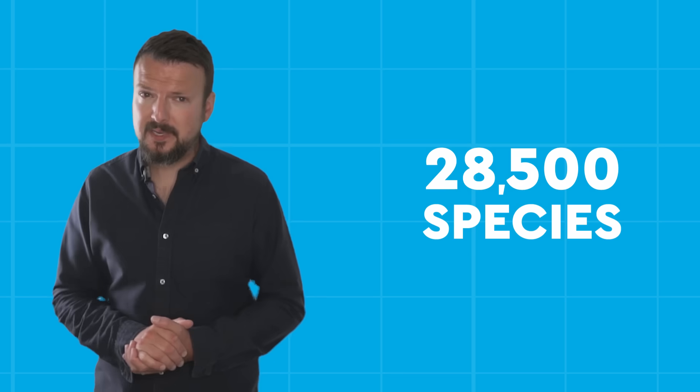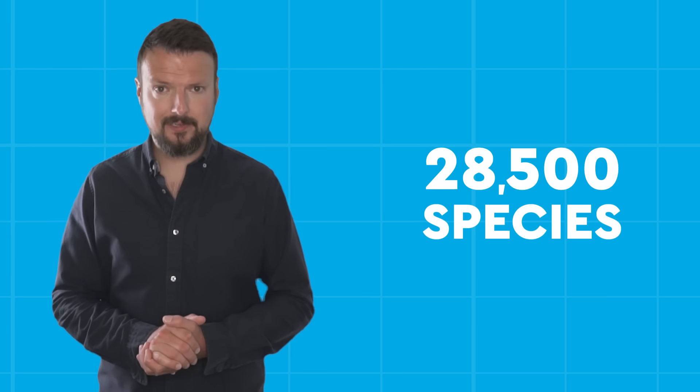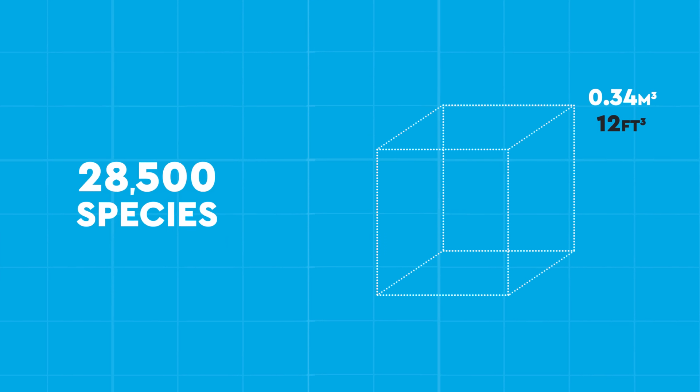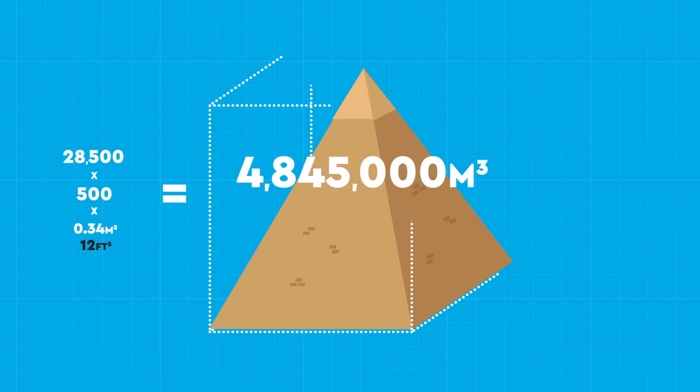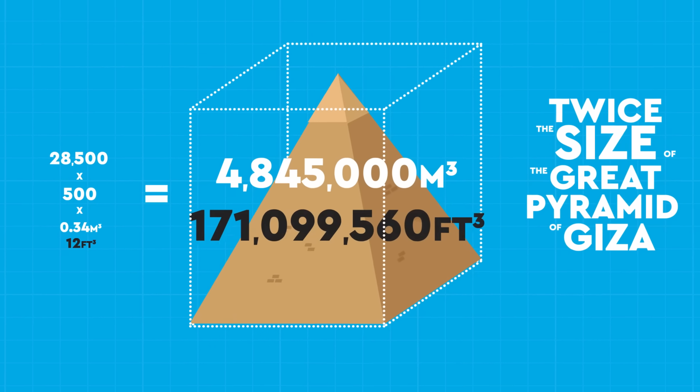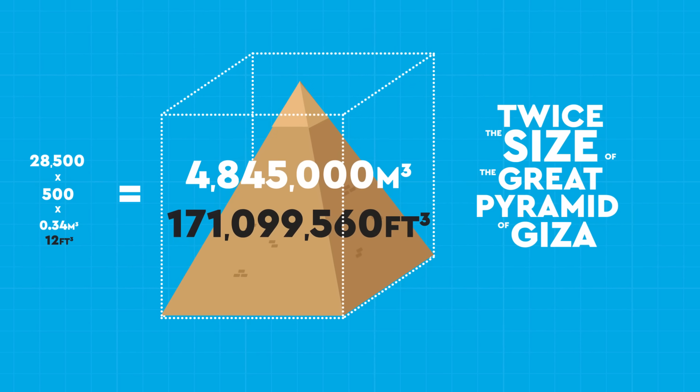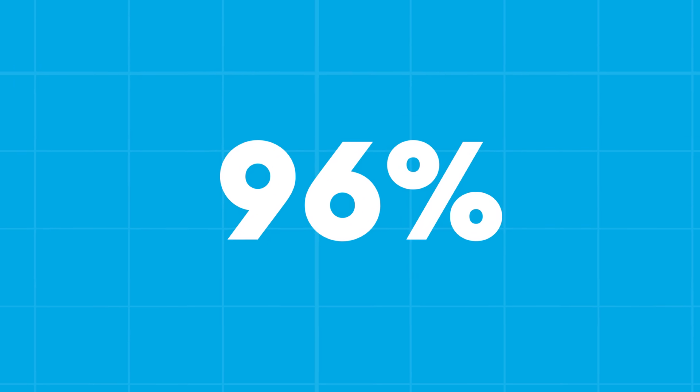Just 3-5% of animals are vertebrates, meaning our ark has about 28,500 species that would be in sheep range. How much space would they need? At 0.34 cubic metres or 12 cubic feet per animal and 500 animals per species, we're looking at 4,845,000 cubic metres or 171,099,560 cubic feet, if we're cramming them in transport style. Well, we still have 96% of animals needing a home.